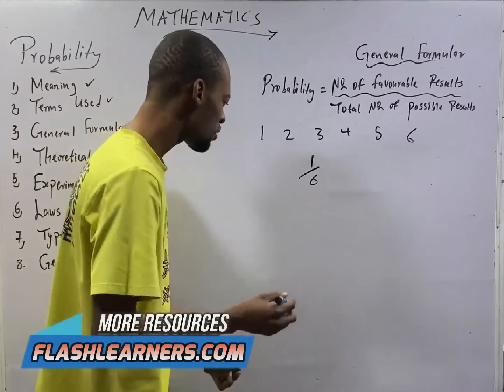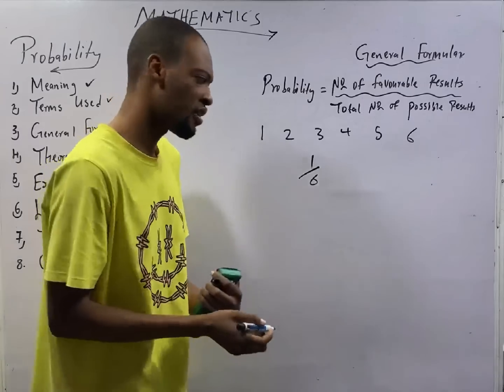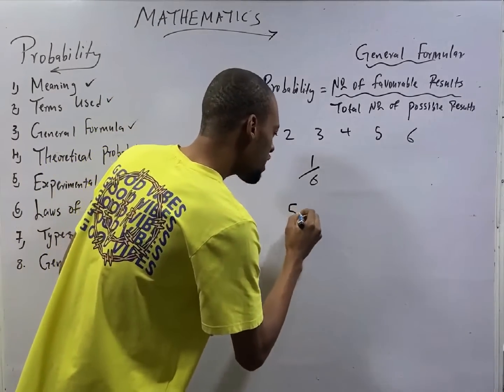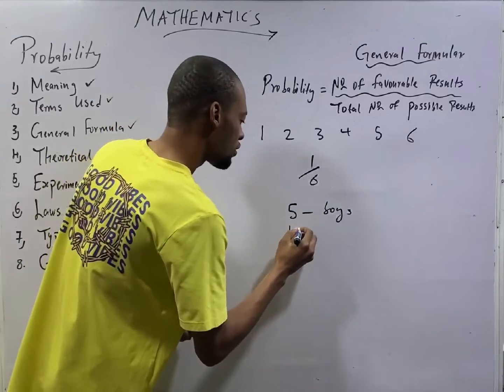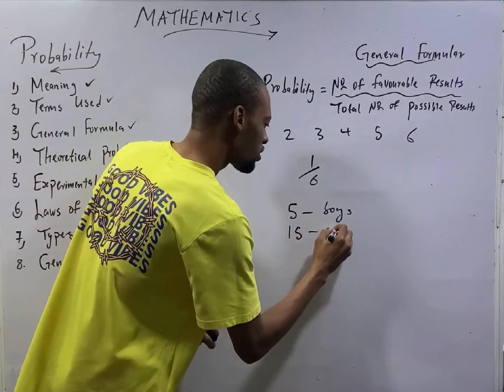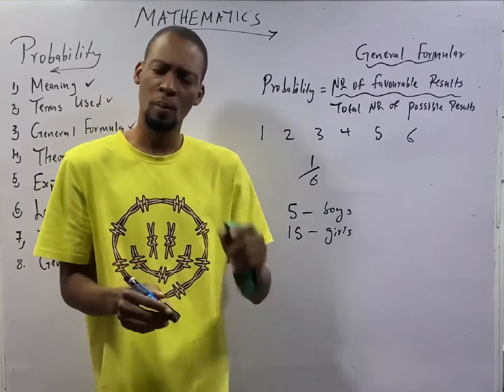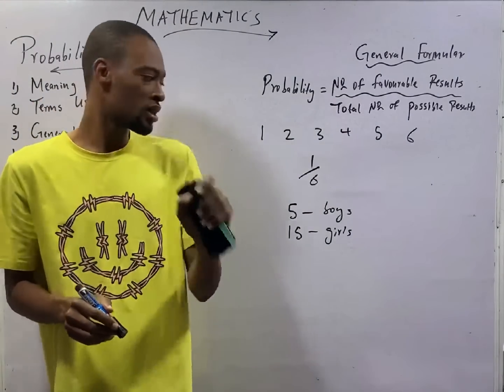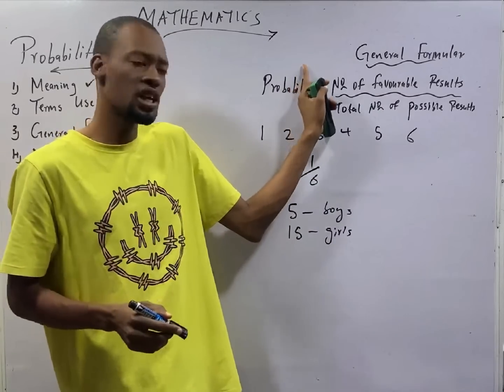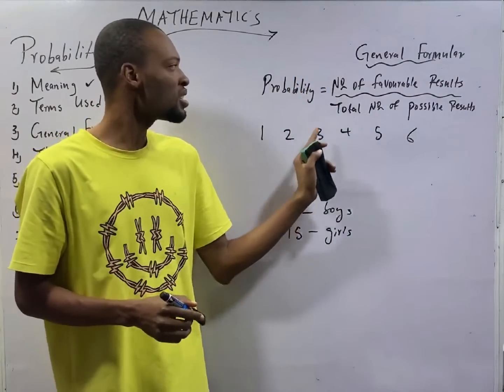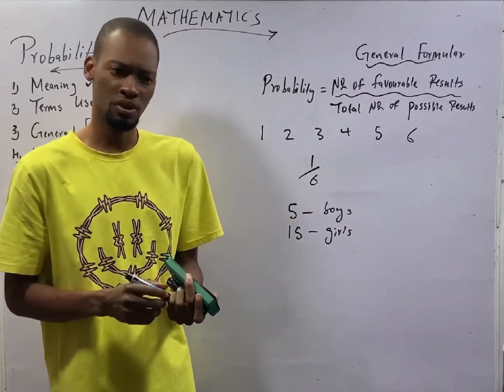If I say, in a class, there are 5 boys and 15 girls. What is the probability that a student picked at random is a boy? You go back to the general formula. Probability is the number of favorable results over the total number of possible results.